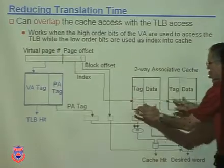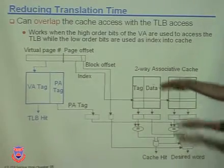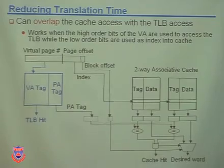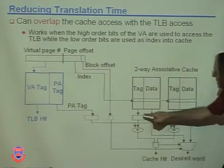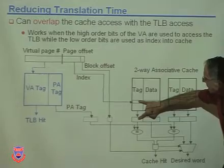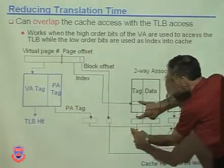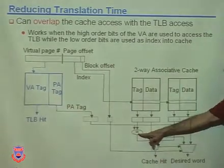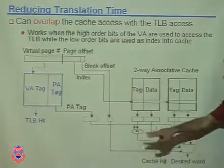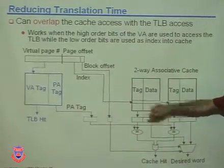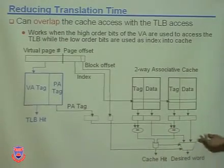We find the index, bring out those cache entries — that's the slow part of memory access. Then we ask: does the tag from the cache match the physical address from the TLB? We compare them. If both match, that's a hit and we have the data we want. If neither matches, there's no hit.